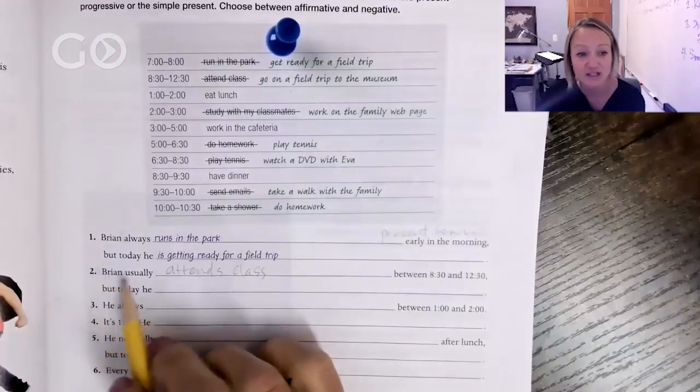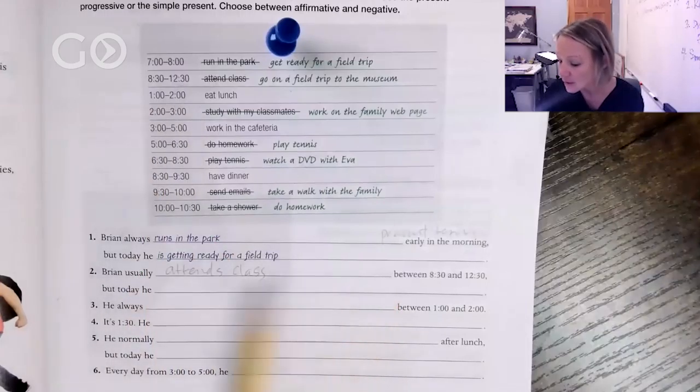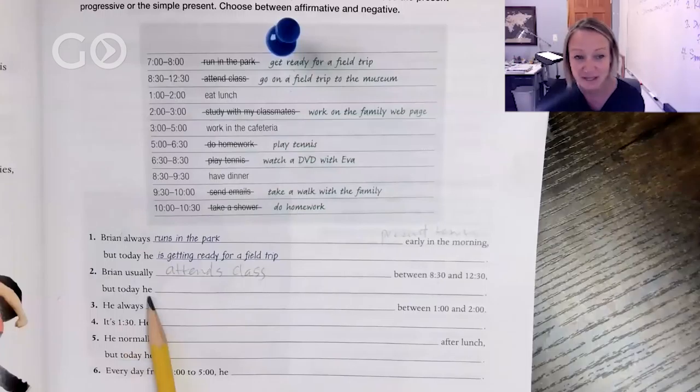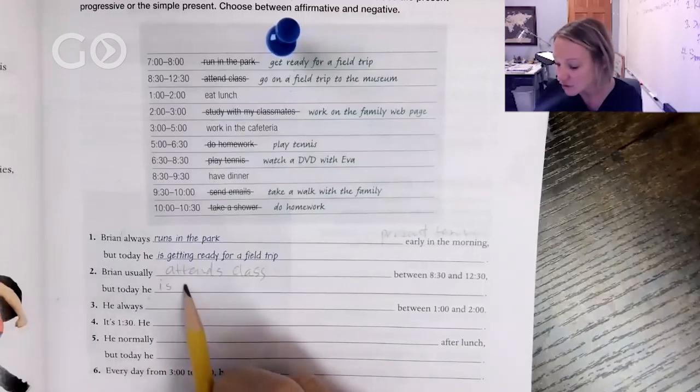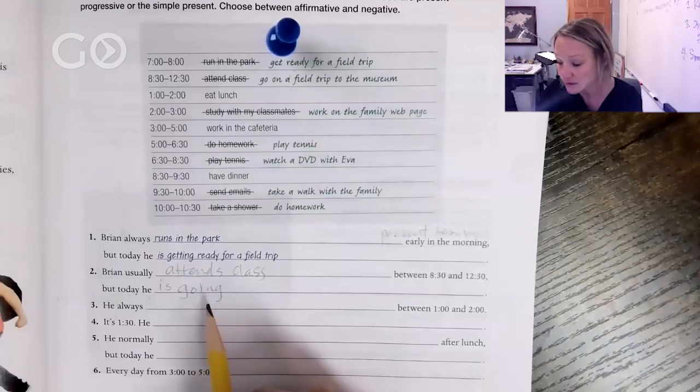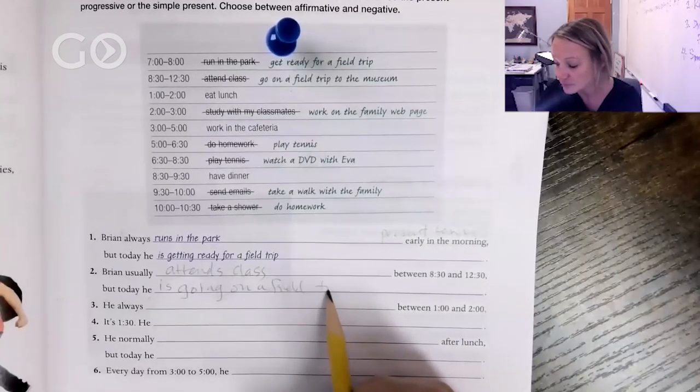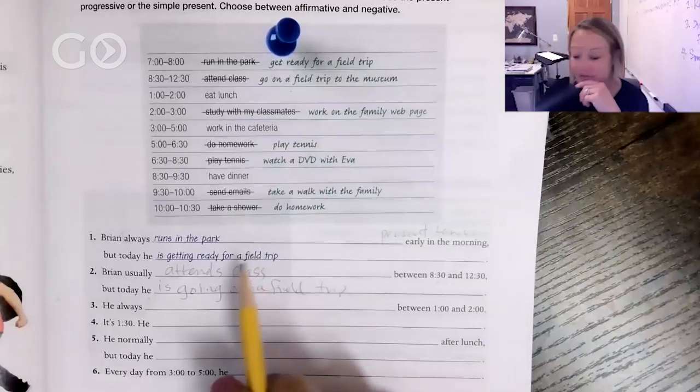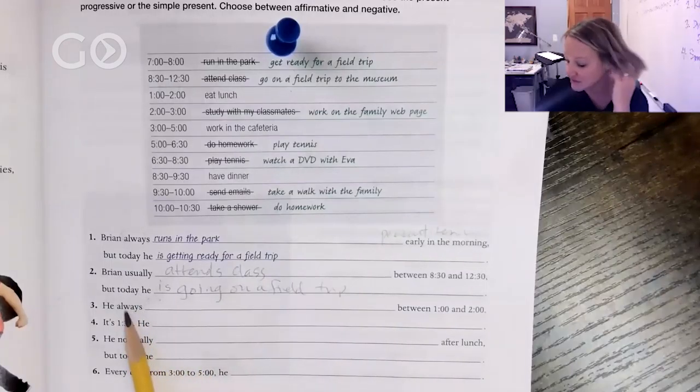Brian usually attends class from 8:30 to 12:30. But today he is, what's he doing today? We're going to use is, third person, going on a field trip to the museum. This is the part I really care about: is going. All right, let's do it, great job.